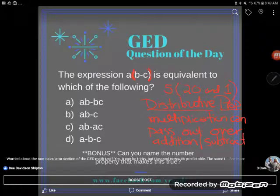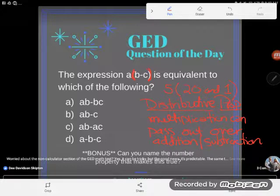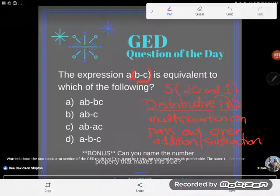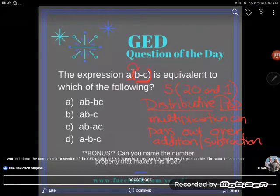So when I see this problem that I have up here, a times the quantity b minus c, I'm not saying just a times b, I'm saying I want a to multiply by everything in this parenthesis, the entire expression, the whole b minus c. Just like if I wanted 5 to multiply across all of 21, I'd have to pass out the 5. Same thing here. In order to make this work, I'm going to have to pass this out.